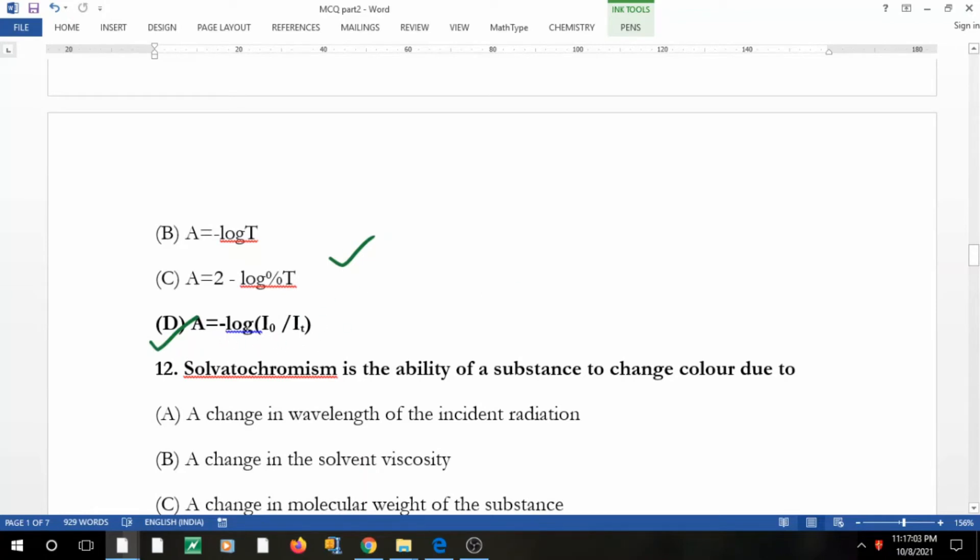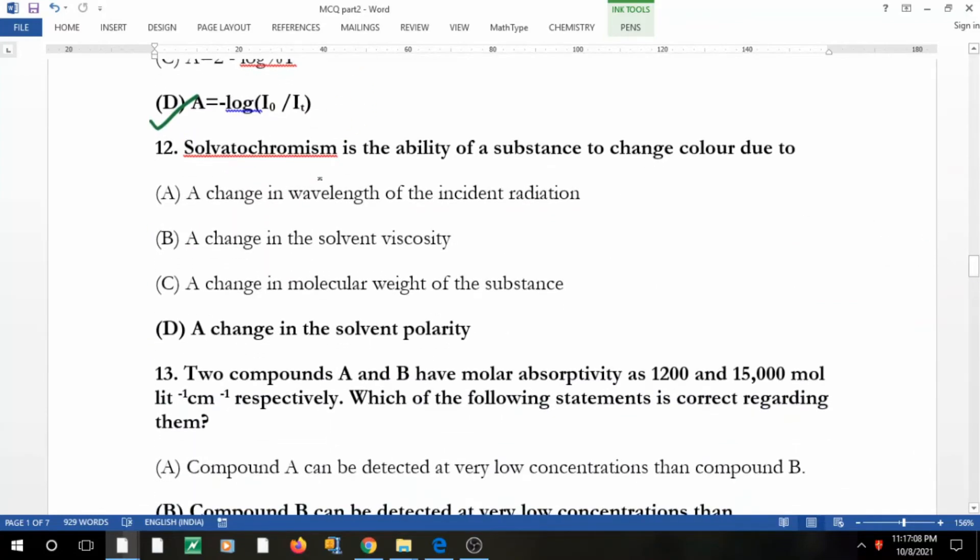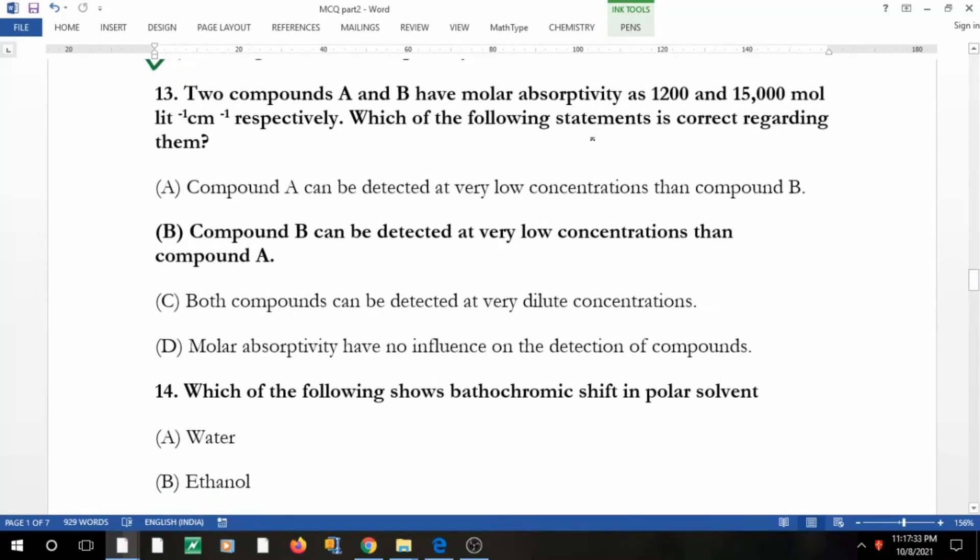What is solvatochromism? The name itself suggests: solvatochromism—in the presence of solvent if there is any change. What is the change? If you change the polarity of the solvent, then the substance can change color, and that is change in solvent polarity. Solvatochromism. You will find this term in my video of bathochromic and hypsochromic shift.